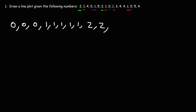And then after that is three — there's only one three. And then next we have four — there are four fours. And then last on the list is five, which I counted two fives.